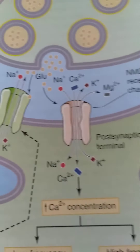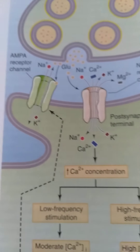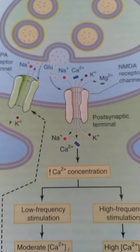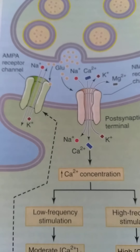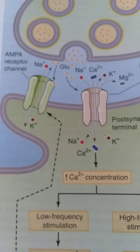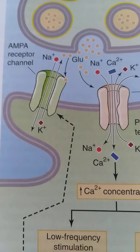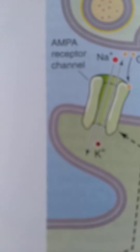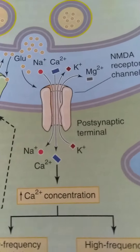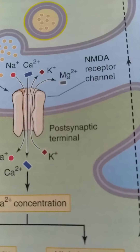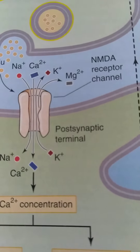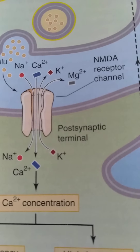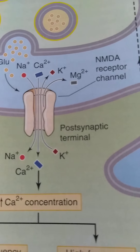This is the post-synaptic membrane. There are receptors present in the post-synaptic membrane. One is the AMPA receptor, and there is another receptor — the NMDA receptor.